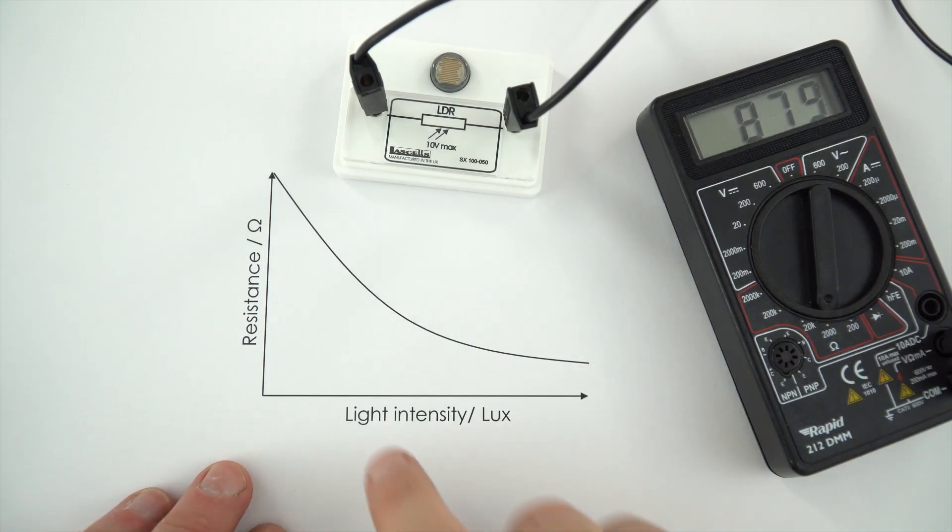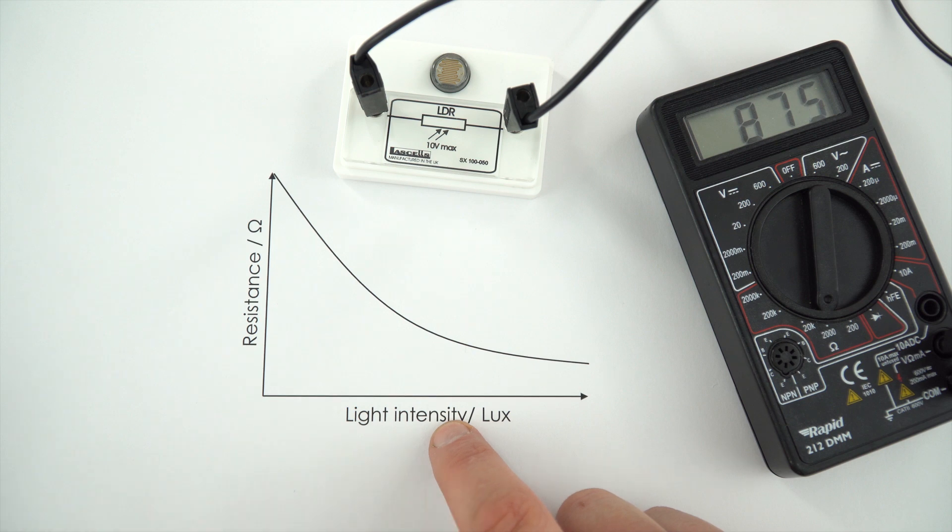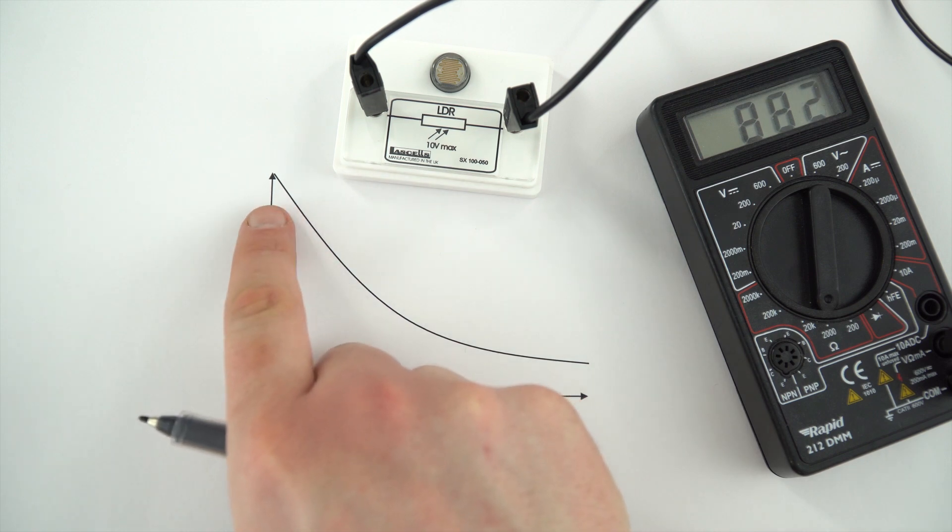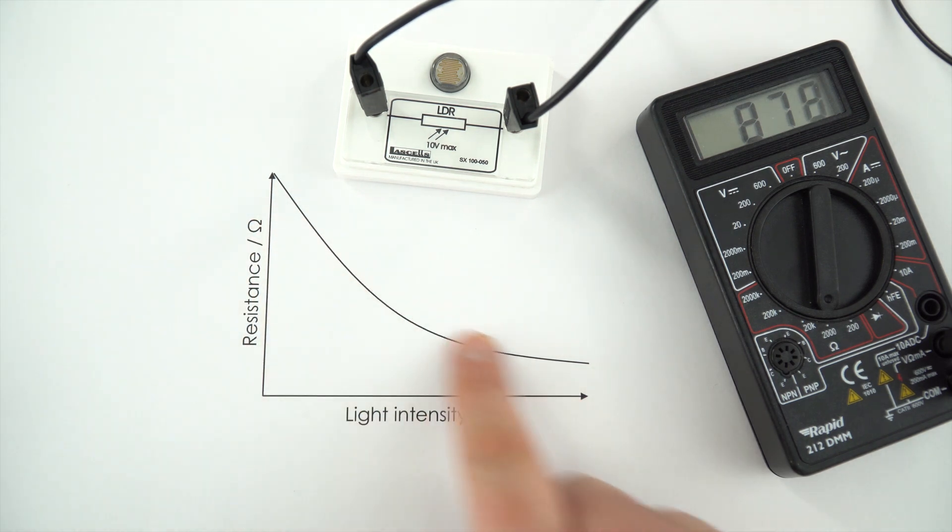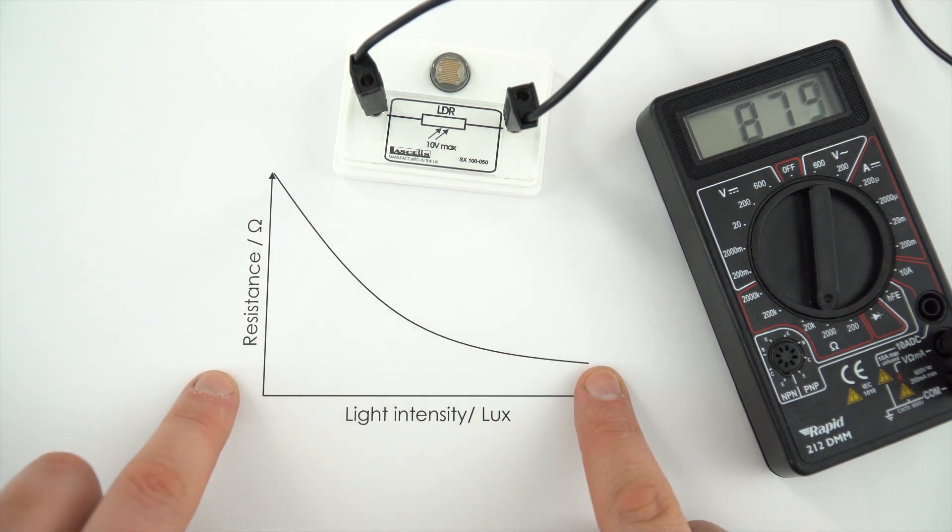Now when we plot on a graph we often measure our light intensity. It's actually measured in lux so this just gives us a number to how bright or dark something is. What we find is as something gets brighter and brighter the resistance goes really far down.